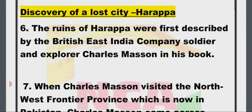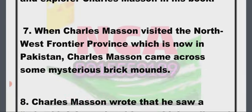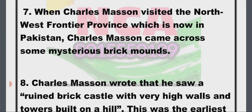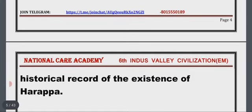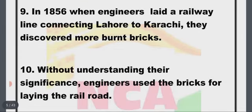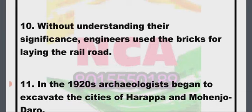Point 7: When Charles Mason visited the northwest frontier province, which is now in Pakistan, he came across some mysterious brick mountains. Point 8: Charles Mason wrote that he saw a ruined brick castle with very high walls and towers built on a hill — this was the earliest historical record of the existence of Harappa. Point 9: In 1856, when engineers laid a railway line connecting Lahore to Karachi, they discovered more burnt bricks. Point 10: Without understanding their significance, engineers used the bricks for laying the railroad.